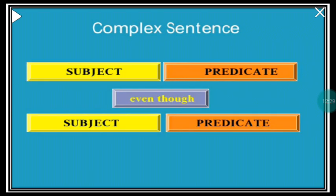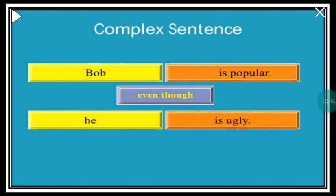In a complex sentence you have subject and predicate joined by a subordinating conjunction like 'even though.' 'Bob is popular even though he is ugly.' 'Bob is popular' is the independent clause — it makes complete sense and stands on its own. But 'even though he is ugly' — even though he is ugly, what? This part cannot stand on its own, so it is the dependent clause, dependent upon 'Bob is popular.'